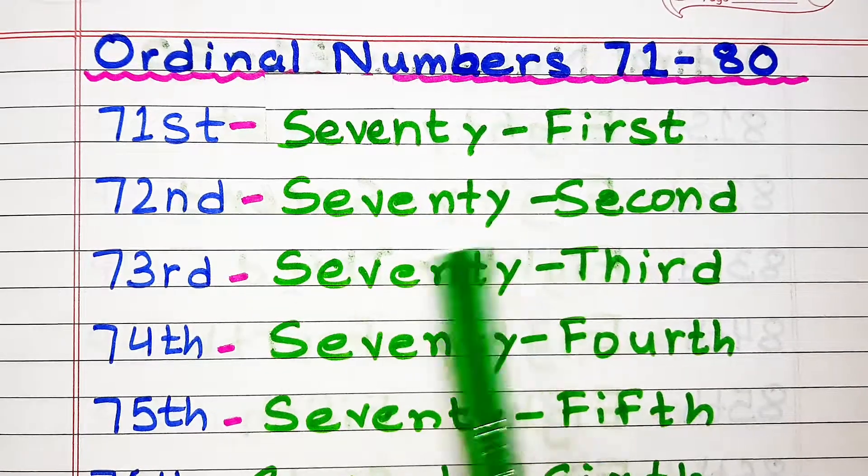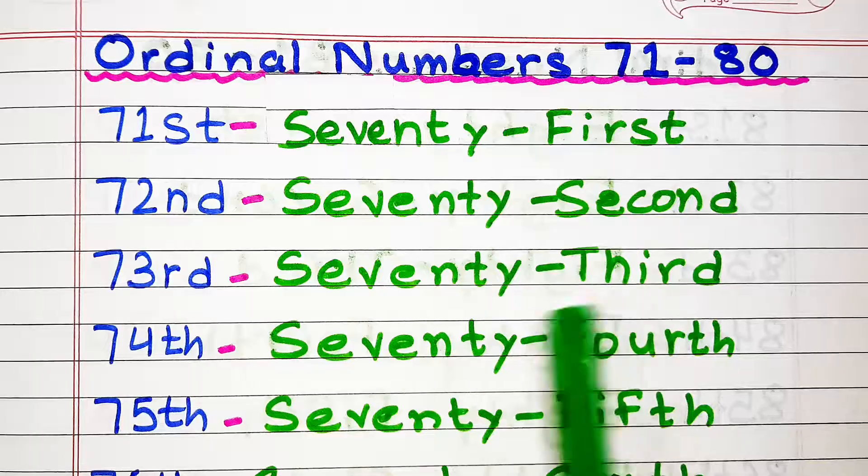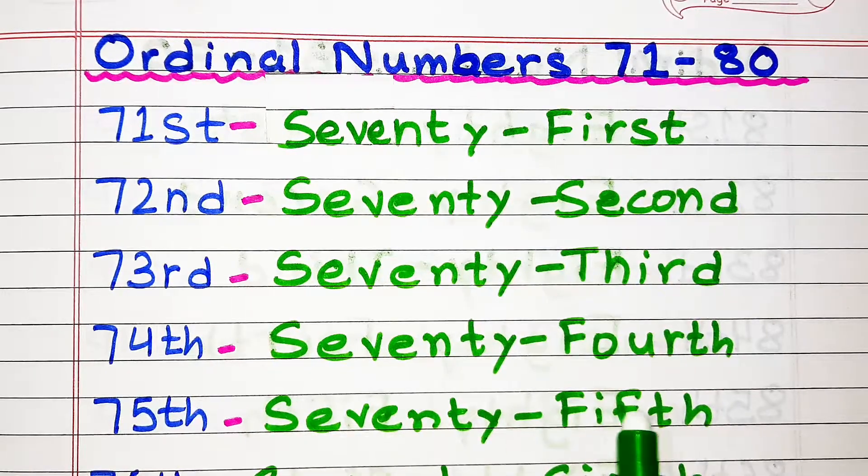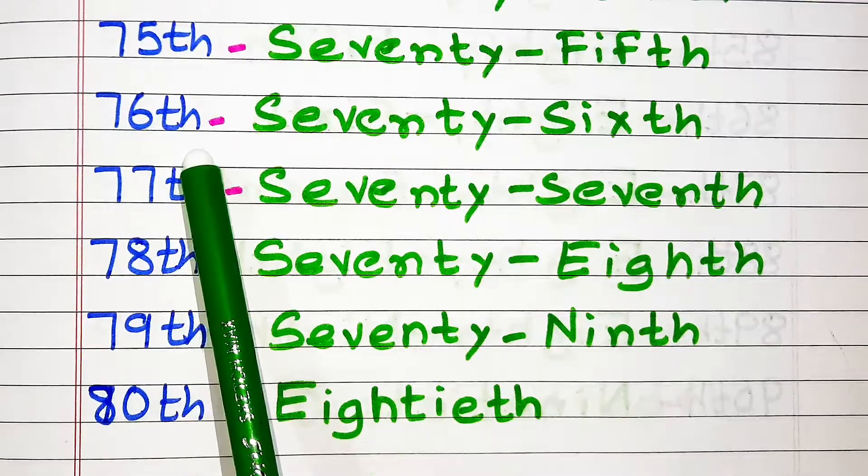Ordinal numbers from 71 to 80. Seventy-first, seventy-second, seventy-third, seventy-fourth, seventy-fifth, seventy-sixth.